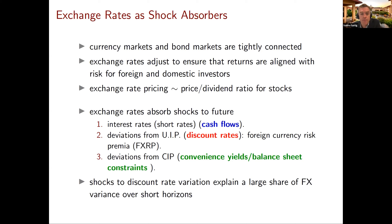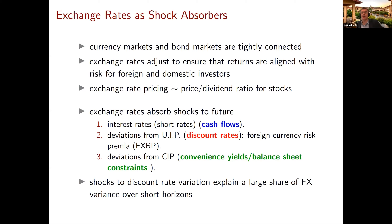Exchange rates are going to have to absorb shocks to future interest rates — you can think about that as the cash flow component that accrues to an investor who takes a long position in foreign currency. It's also going to reflect news about future discount rates, which are deviations from uncovered interest rate parity — in other words, foreign currency risk premia. And there's potentially a third force: deviations from covered interest rate parity, reflecting convenience yields from safe asset demand and balance sheet constraints experienced by financial intermediaries.